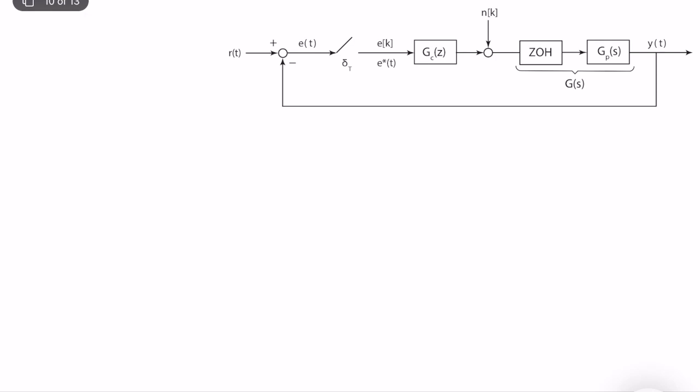In today's lecture, we will analyze the steady-state error or performance of a system for a specific type of input called process noise or process uncertainty, which affects our control system right after the control action. This is the computed control action, but because of disturbance, our effective control action can be slightly different, which of course can affect our system.